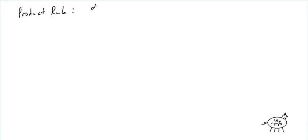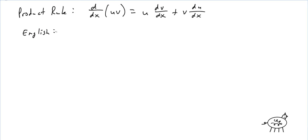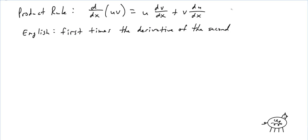Let me first do it mathematically. d/dx of uv is equal to u·(dv/dx) plus v·(du/dx). In English: it's the first times the derivative of the second, plus the second times the derivative of the first.